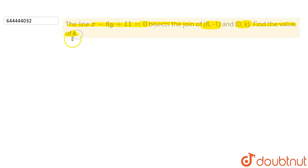We have a point A which is (8, -1) and another point B which is (0, k). The line joining these two points will be like this. Now, before solving this question, let's understand some concepts.